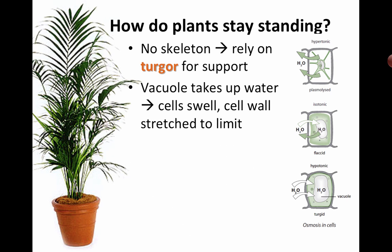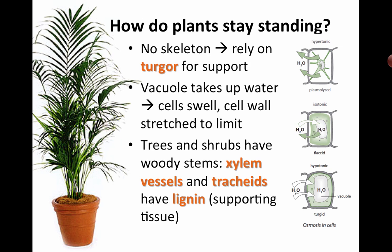Turgor works because the vacuole takes up water, the cells swell, and the cell wall on the outside prevents the cell from bursting — unlike animal cells, where too much water can cause cells to burst. If you don't water your plants for a while, you see them start to wilt. Trees and shrubs also have woody stems, and the xylem vessels and tracheids have something called lignin, which adds additional structural support to the plant cells.